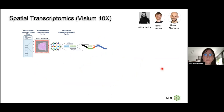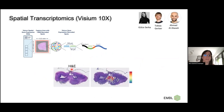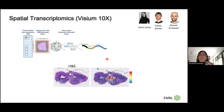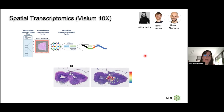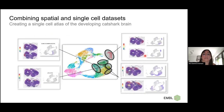We also generated spatial transcriptomics datasets using Visium technology, with several transverse sections stained with hematoxylin and eosin. Sections are placed on a grid of dots that capture RNA, and each dot labels RNA with a unique spatial barcode. While not single-cell resolution, the power lies in having access to the whole transcriptome — and this becomes even more powerful when combined with our single-cell dataset from the same developmental stage.